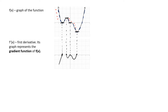When the curve is increasing, the gradient of the tangent is positive — in other words f dash x is positive. So the curve of f dash x is going to be above the x axis. And here's a quick sketch of my f dash x curve.